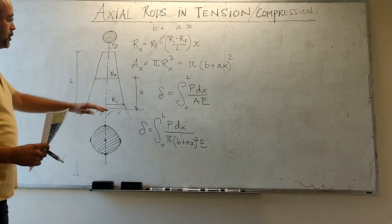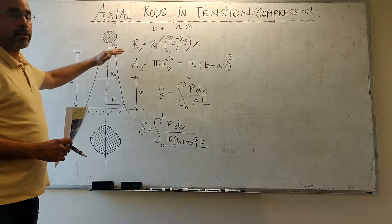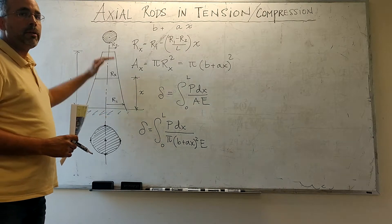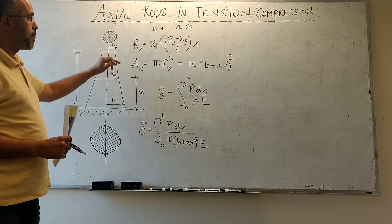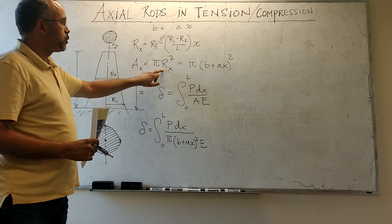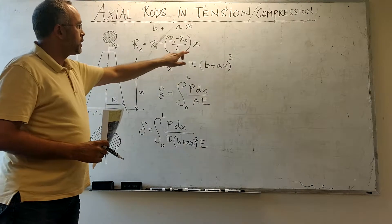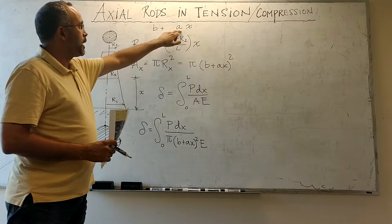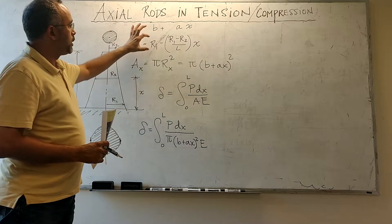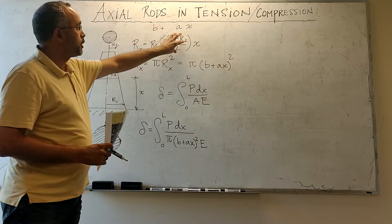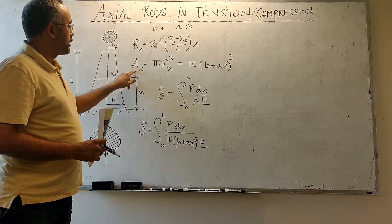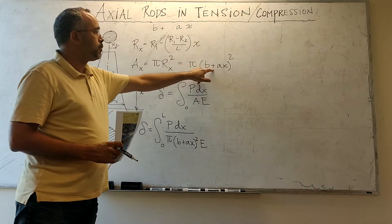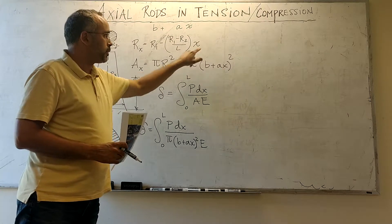The variation in radius is linear; however, that doesn't mean that the variation in area is linear, because the area is πr². So if we write the variation in radius as b plus ax — where b is r1 and a is the slope term — then the area as a function of X is simply π times (b plus ax) squared.